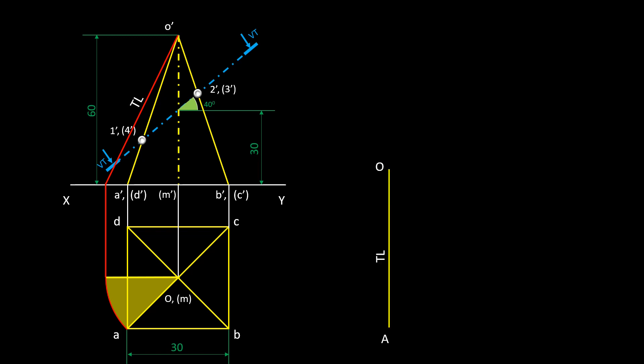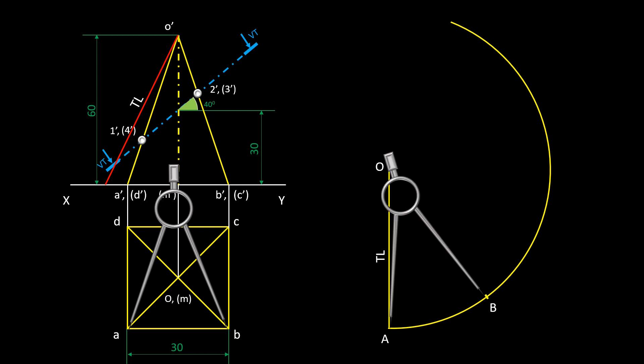The developed pattern of a pyramid will inscribe in a sector of a circle with the radius of true length of slant edge. Draw the arc in a convenient length. Measure the true length of the base edge AB and mark it on the arc. Complete all the other corners by taking the true length from the orthographic projection.